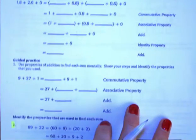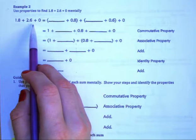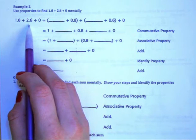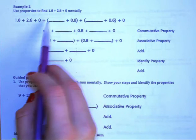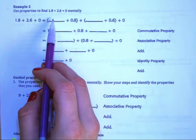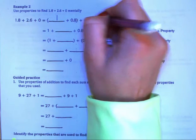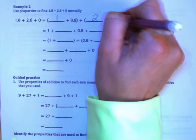Let's go on to page 6. Example 2 says use properties to find 1 and 8 tenths plus 2 and 6 tenths plus 0 mentally. So we have our original problem. We can break it apart into whole numbers and decimals to start off with to make it a little bit easier to look at. So 1 plus 8 tenths plus 2 plus 6 tenths plus 0.